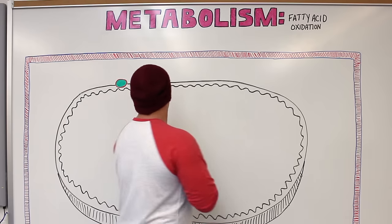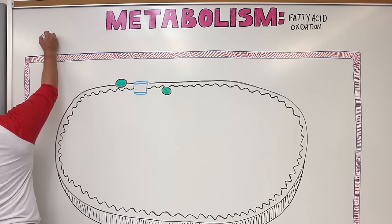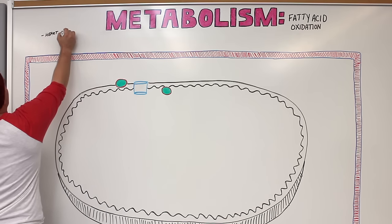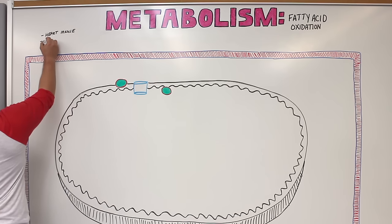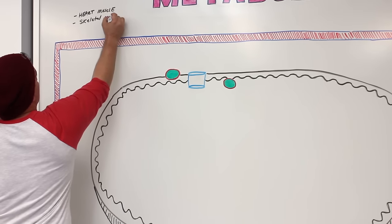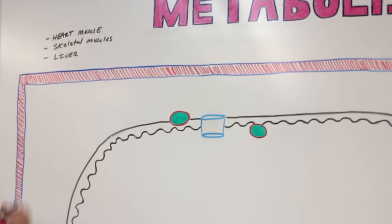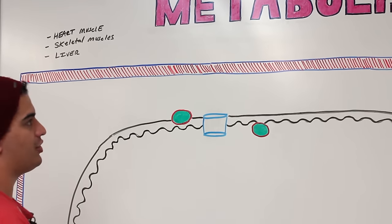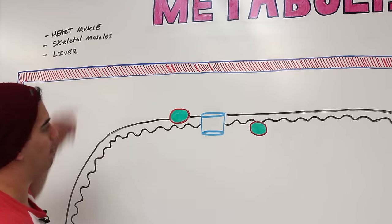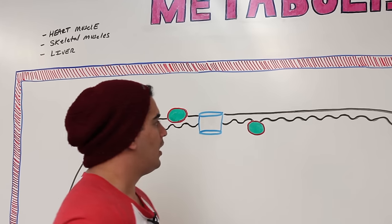The three really important tissues we're taking fatty acids to are the heart muscle (the myocardium), the skeletal muscles, and even the liver. Many different tissues will utilize these fatty acids for energy, but the big ones are muscle and liver. The liver is really important because it can generate structures called ketone bodies.